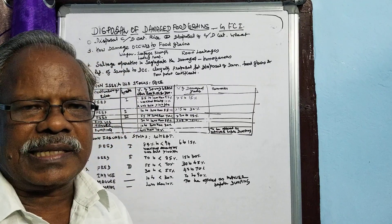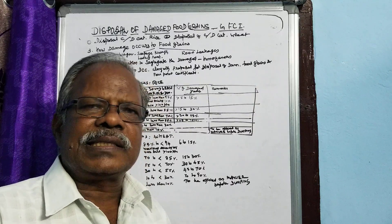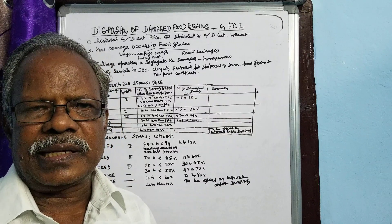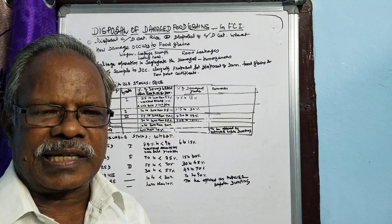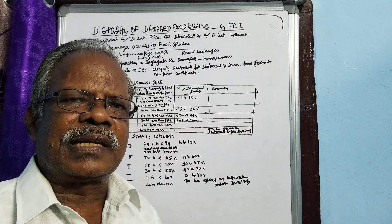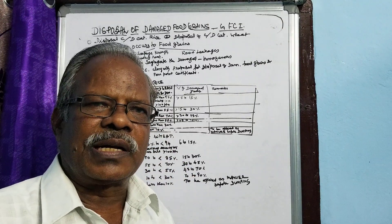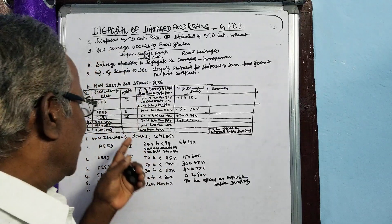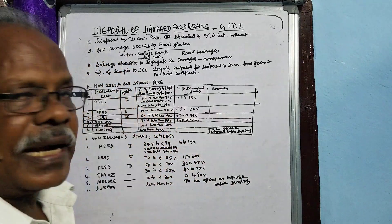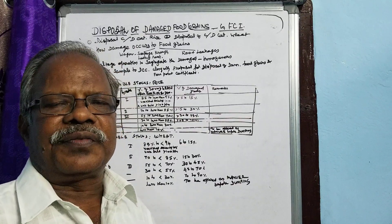The sample will be analyzed — the damaged grains, which contain good grains as well as damaged grains, will be analyzed properly in the district categorization lab. The analysis report is recorded, and it is determined which grade the sample falls under — whether it is Feed 1, Feed 2, Feed 3, industrial use, manure, or dumping. This categorization or grading is the purpose of DCC.